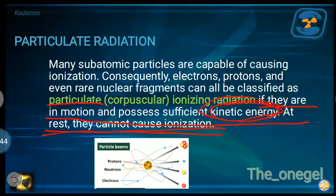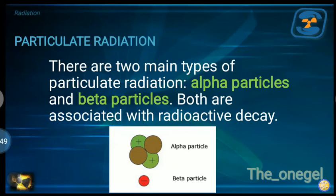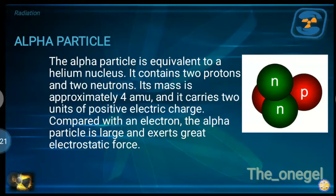There are two main types of particulate radiation: alpha and beta. Both are associated with radioactive decay. The alpha particle is equivalent to a helium nucleus — it contains two protons and two neutrons bound together. Its mass is approximately 4 AMU (atomic mass unit), and it carries two units of positive electric charge.